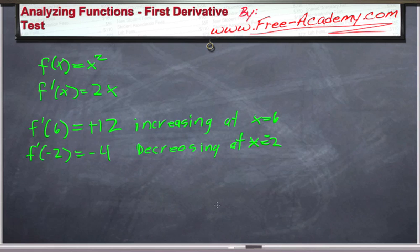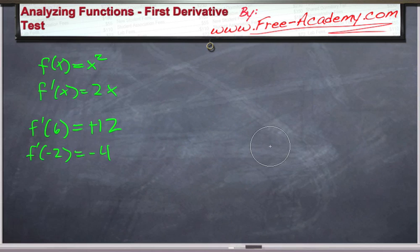So it's some useful information, but can we determine something more global about this? Can we determine on what ranges f of x is increasing and what ranges f of x is decreasing? And the answer is that you can. What you do is you take your first derivative and you set it equal to 0 and then you solve for x, which in this case is x equals 0.